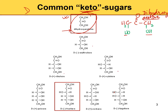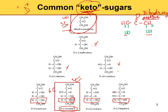I'm not going to ask you to memorize four-carbon or five-carbon keto sugars — we go directly to the six-carbon one, which is fructose. Fructose is the sugar found in fruits — that's where the name comes from. It's an important keto sugar, a six-carbon keto sugar. These are D forms as well, so the most distant OH has to be on the right-hand side. As a question to think about: is dihydroxyacetone a D or L form?